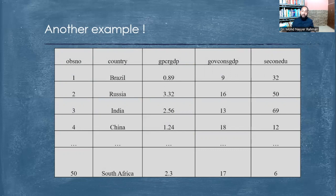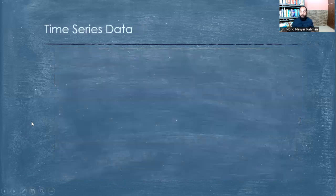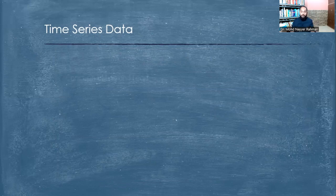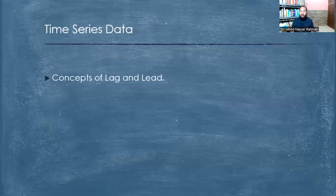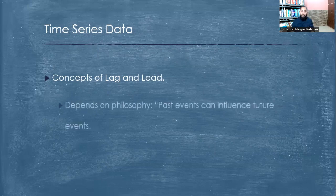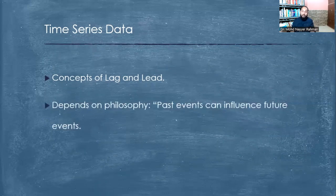The second type of data which is important in econometrics is time series data, and this is the most powerful data in the sense because its focus is on the time frame. Here we have the concept of lag and lead. Lag means that the past influences the future, and lead means that the future is related to the present. The 2010 GDP value may have an impact on the 2012 GDP value, and the 2015 GDP value which is going to be there will be determined from the 2012 GDP. So we have historical evidence, trend analysis, and we also have forecasting. It depends on the philosophy that past events can influence future events.